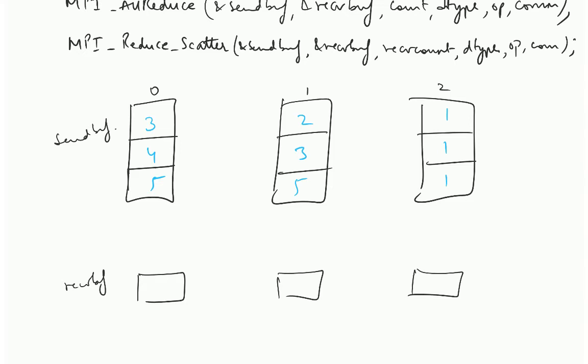There is going to be element wise additions. So you are going to add up the first elements of all the ranks. So 3 plus 2 plus 1, that is 6. That is going to be available on rank 0. The next sum is 4 plus 3 plus 1, which is 8. That is going to be available on rank 1. And the third sum is 11. That is going to be available on rank 2.